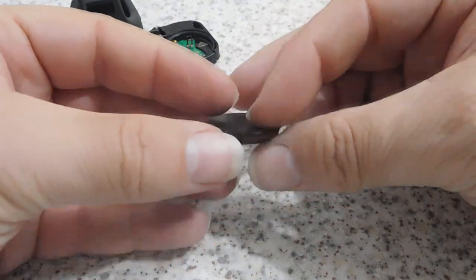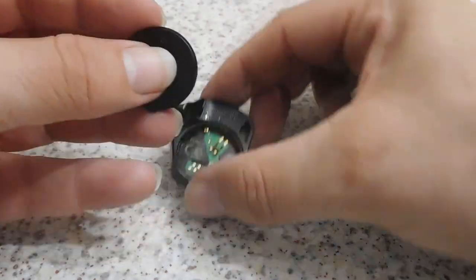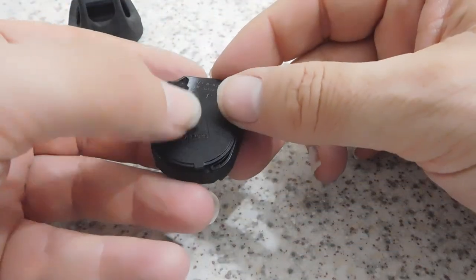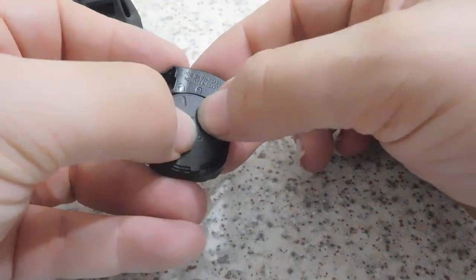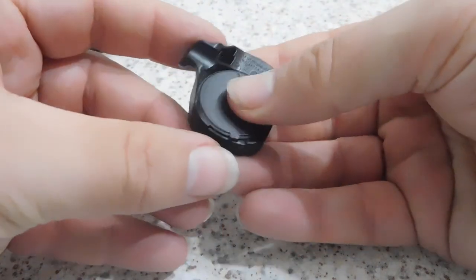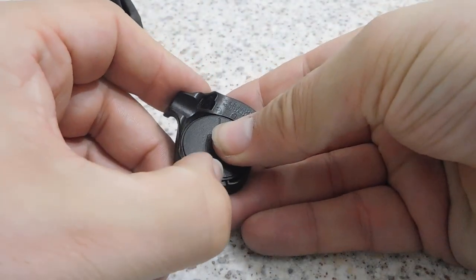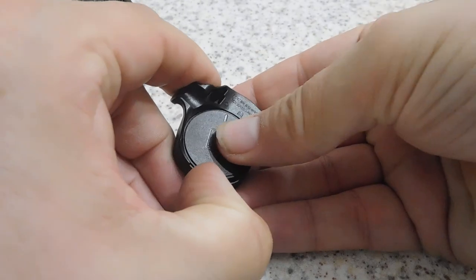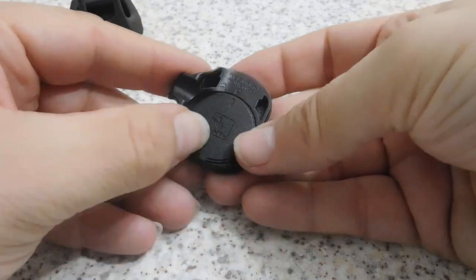Then just reverse the process and refit it. Drop the cover back in there. Line it up with the unlock symbol. Put a little bit of pressure on to push it in place, give it a quick twist around, and that's locked in.